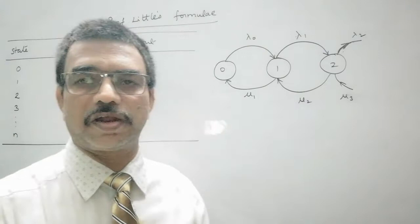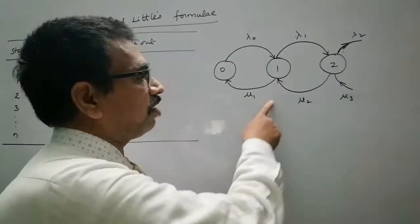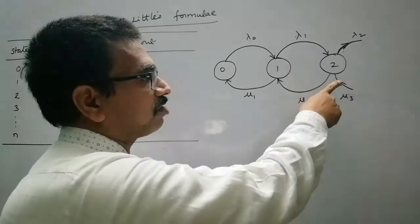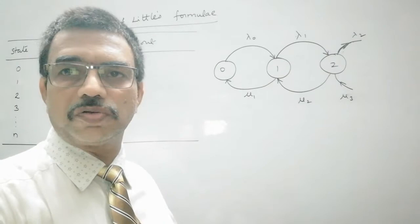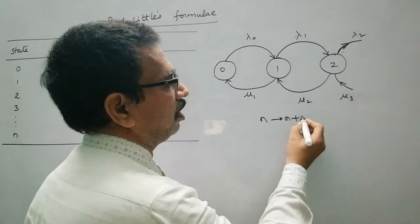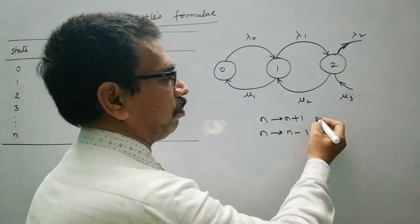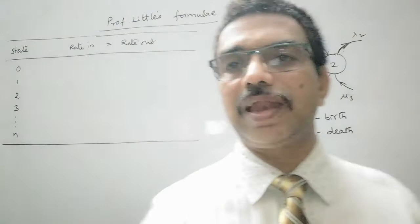Similarly, μ₁, μ₂, μ₃ etc. represent the mean service rate. Suppose the state is at 1 — with one service completion the state will reach 0, meaning there will be no customer in the system. Suppose the state is 2 with parameter μ₂; with a service completion the state will reach from 2 to 1. So with an arrival the state tends from n to n+1, and with a service completion the state tends from n to n-1. This is a birth, and a service completion is a death.